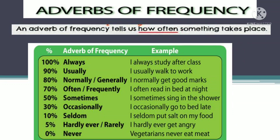Adverb of frequency tells us how often something takes place — yani ki uski frequency kya hai, uski repetition kya hai kisi bhi action ki. Hamesha hota hai? Kabhi kabhar hota hai? Ya kabhi nahi hota hai? Iska percentage basis par use karte hain. Jab koi action kabhi nahi hota, toh 'never' use karenge. Jab action hamesha hota hai, toh 'always.' For example: 'I usually walk to work' — mein praya paidal chal kar hi kaam par jaata hoon. 'I sometimes sing in the shower' — mein kai baar shower mein gaana gaata hoon.